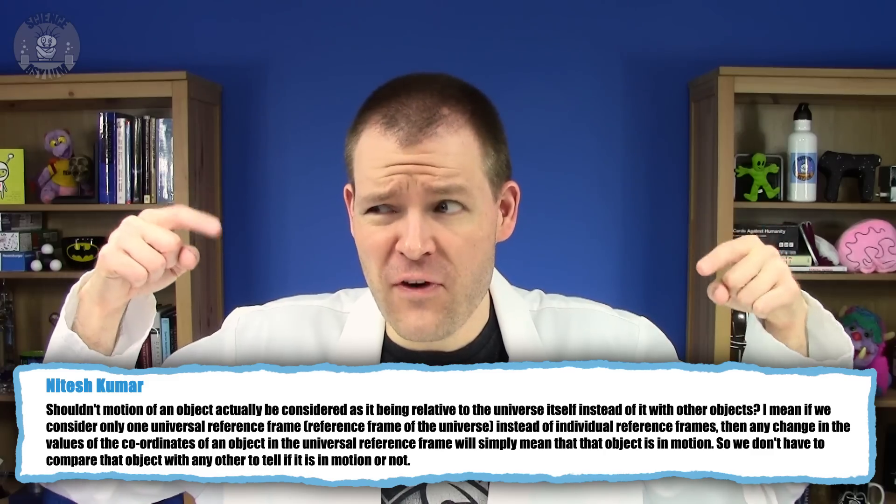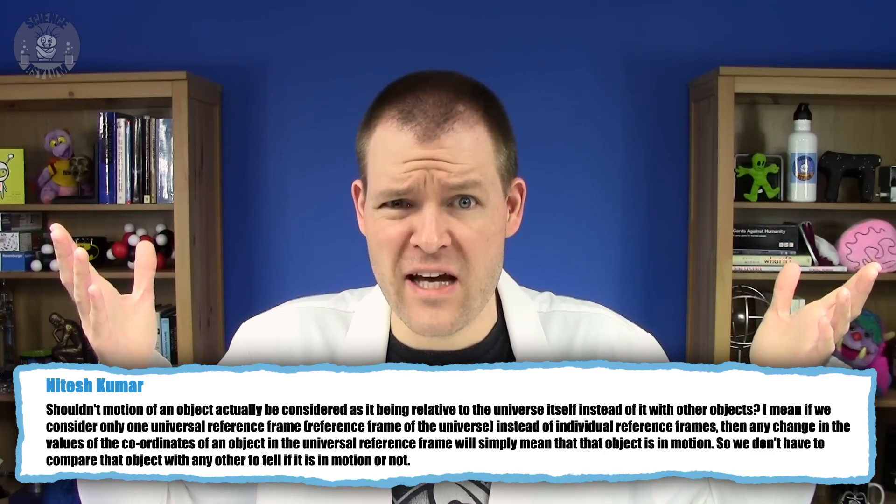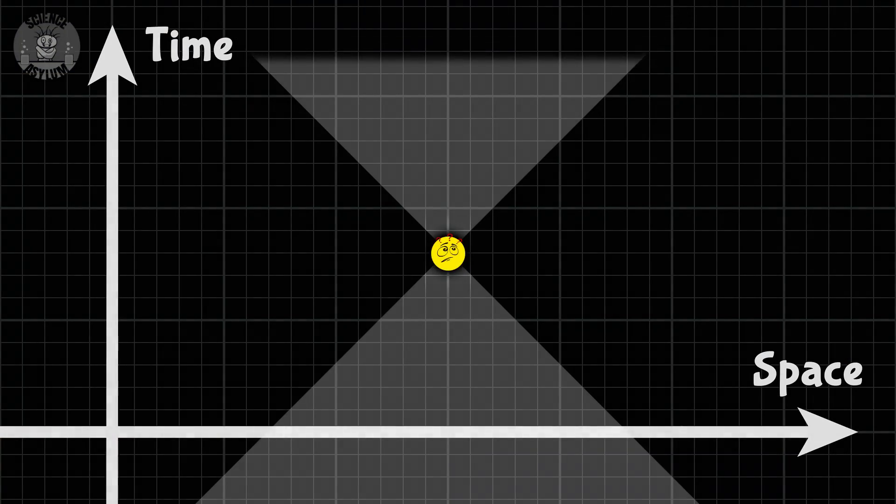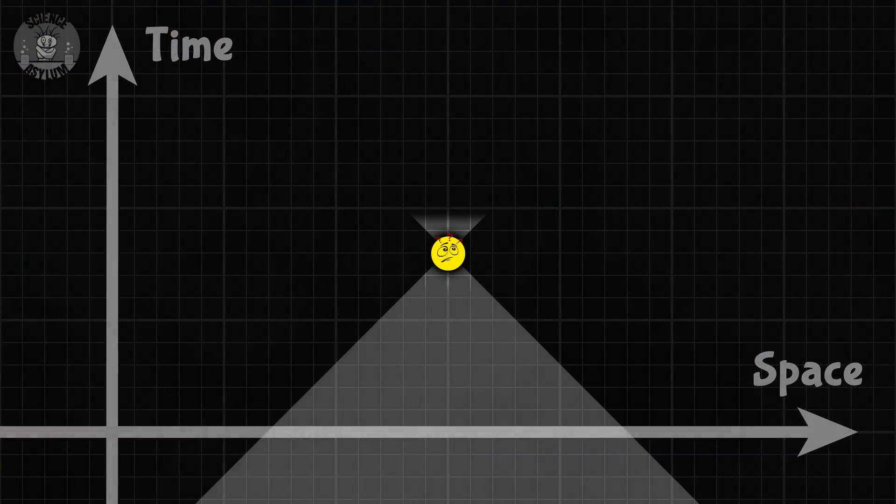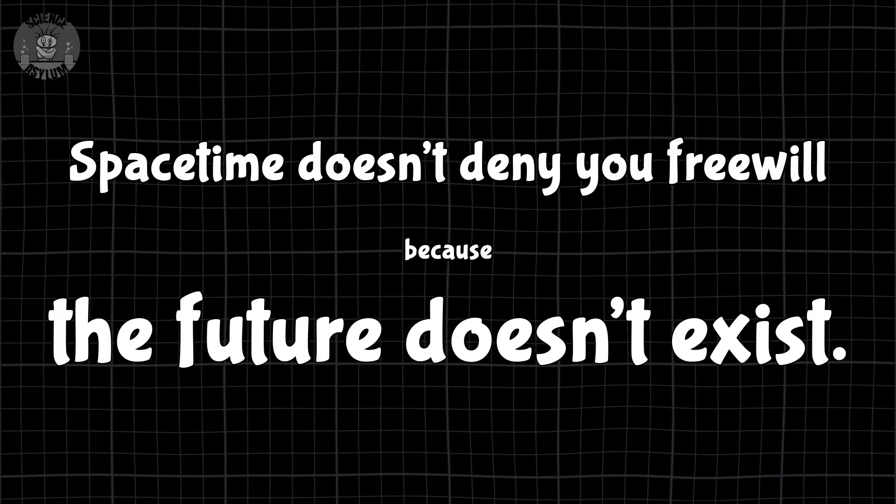There's no universal reference frame because there's no universe, at least in the way that people usually understand it. This spacetime diagram is only a map of predictions about a non-existent future and predictions about a non-existent past. It's attached to you as you move through spacetime. Spacetime doesn't deny you free will because the future doesn't exist. All that exists for anyone is their local here and their local now.